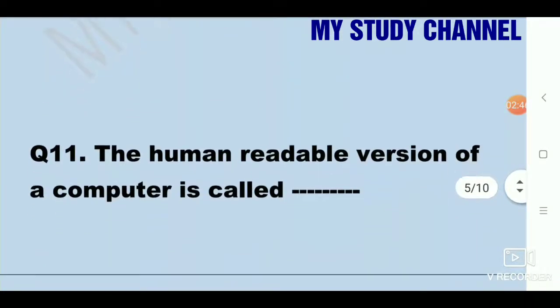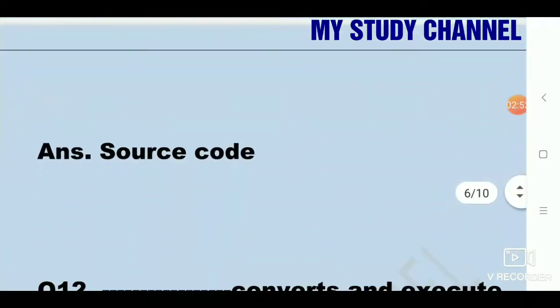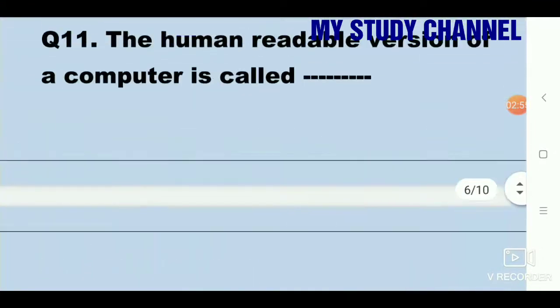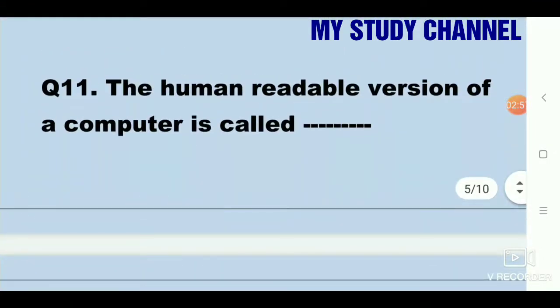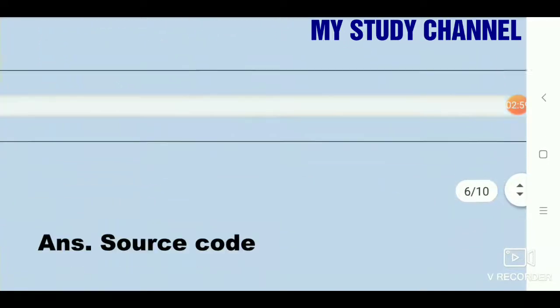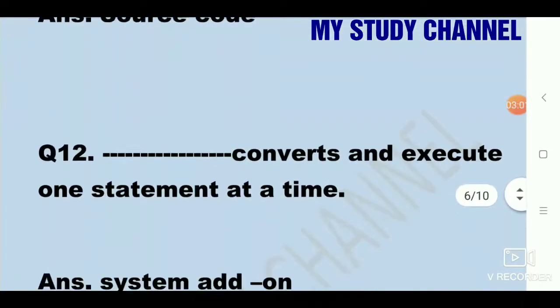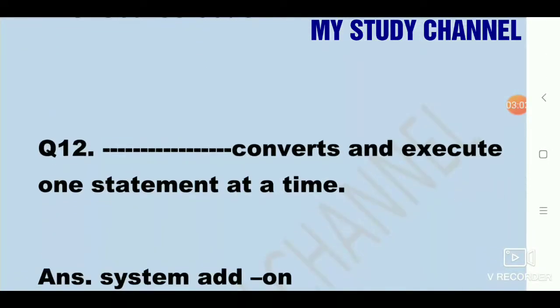Next question, the human readable version of a computer is called - source code. Next question, dash converts and execute one statement at a time. Answer is system add-on.